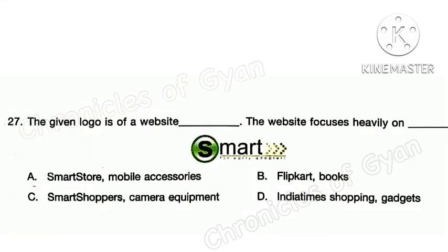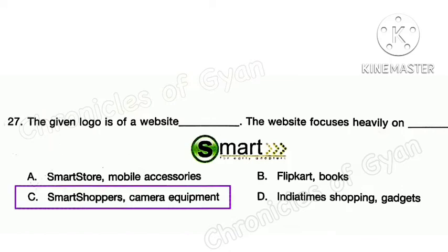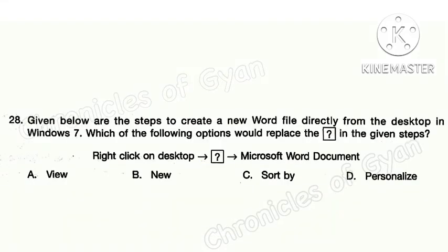Question 27. The given logo is of a website — the blank. The website focuses heavily on the blank. Correct answer is option C: the given logo is of the website Smart Shoppers, and the website focuses heavily on camera equipment. Question 28. Given below are the steps to create a new Word file directly from the desktop in Windows 7. The steps are: right-click on desktop, then New, then Microsoft Word document. So the correct option is option B: New.